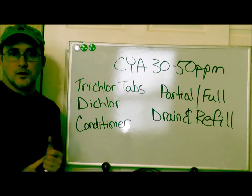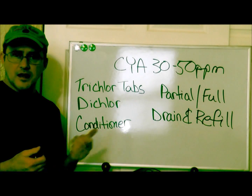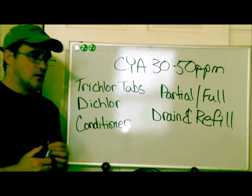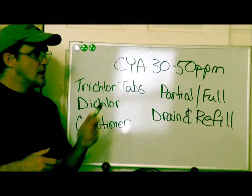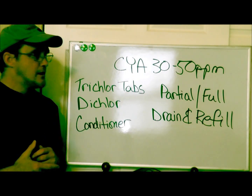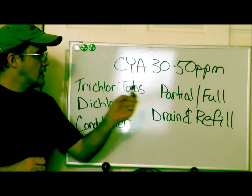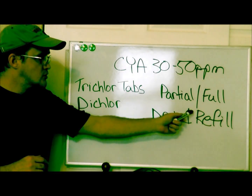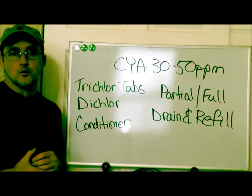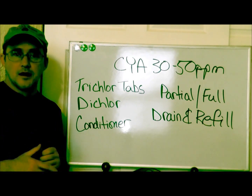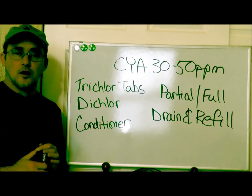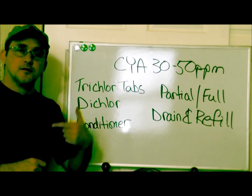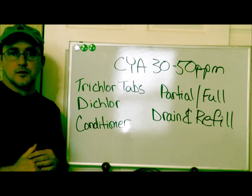The third cause is liquid conditioner — which, again, liquid conditioner, stabilizer, and cyanuric acid are all the same thing. The only time you want to add this is when your cyanuric acid is too low. Now, the only way to reduce your cyanuric acid — there's no chemical for this. You're going to have to do either a partial or full drain and refill, because the new fill water is not going to have any stabilizer in it. Once you do that, allow it to filter for about 10 hours, retest, and then start making the adjustments that are needed.